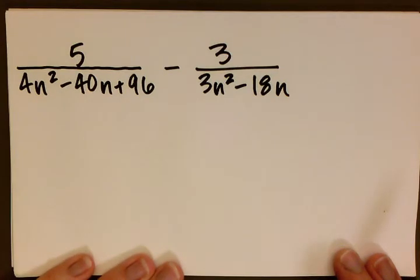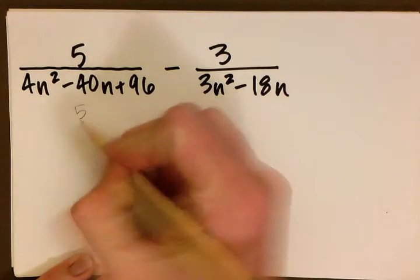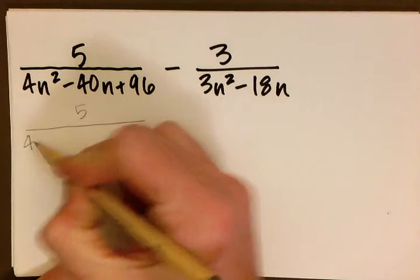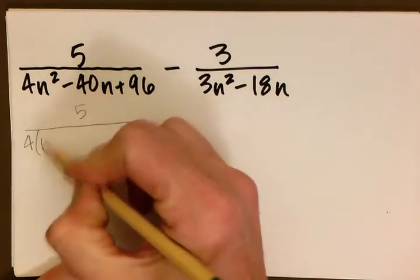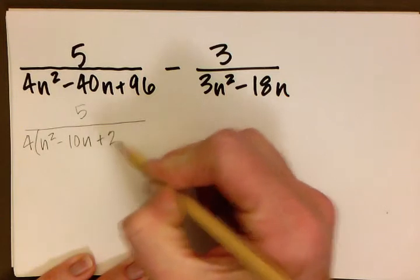The first thing we want to do here is factor. So we're going to go ahead and keep 5 in the numerator. If we factor out a 4 from the denominator, that leaves us with n squared minus 10n plus 24.